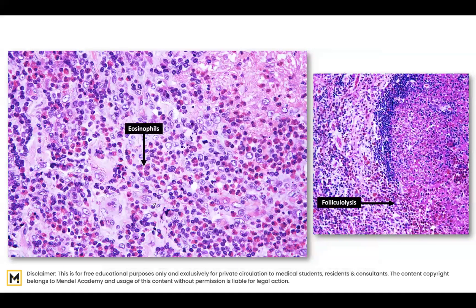You can see plenty of eosinophils here — the typical bilobed nucleus and the bright pink cytoplasm. You can see plenty of them; they are ubiquitous in number.